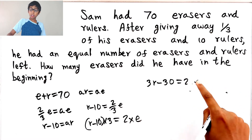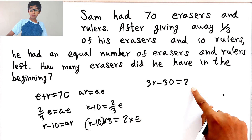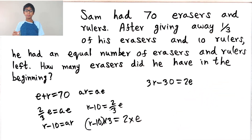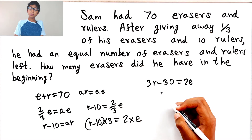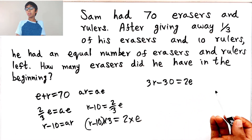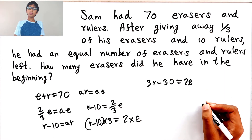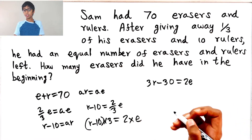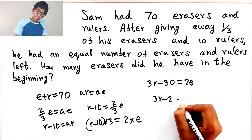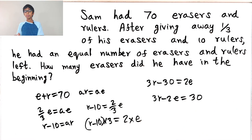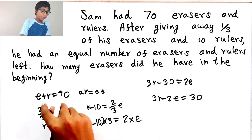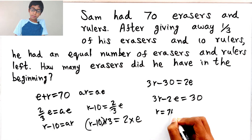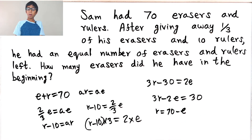So I'm going to write it as two E. Now let's move the minus 30 over here — it becomes minus 30 — and move two E over here — it becomes minus two E. So three R minus two E equals 30. Now let's look at the first equation: E plus R equals 70. Moving E over gives R equals 70 minus E.